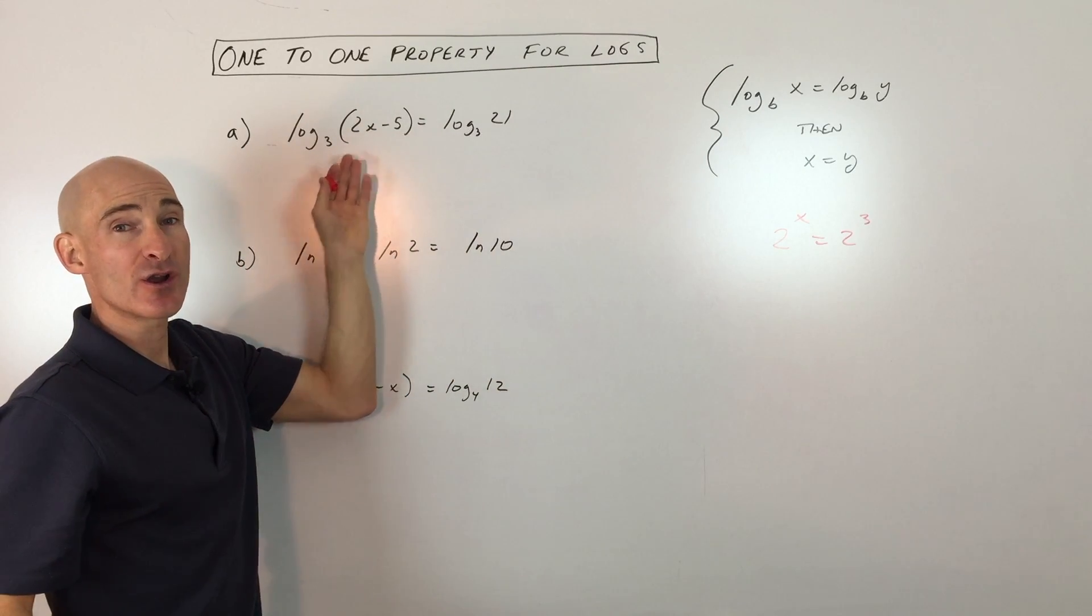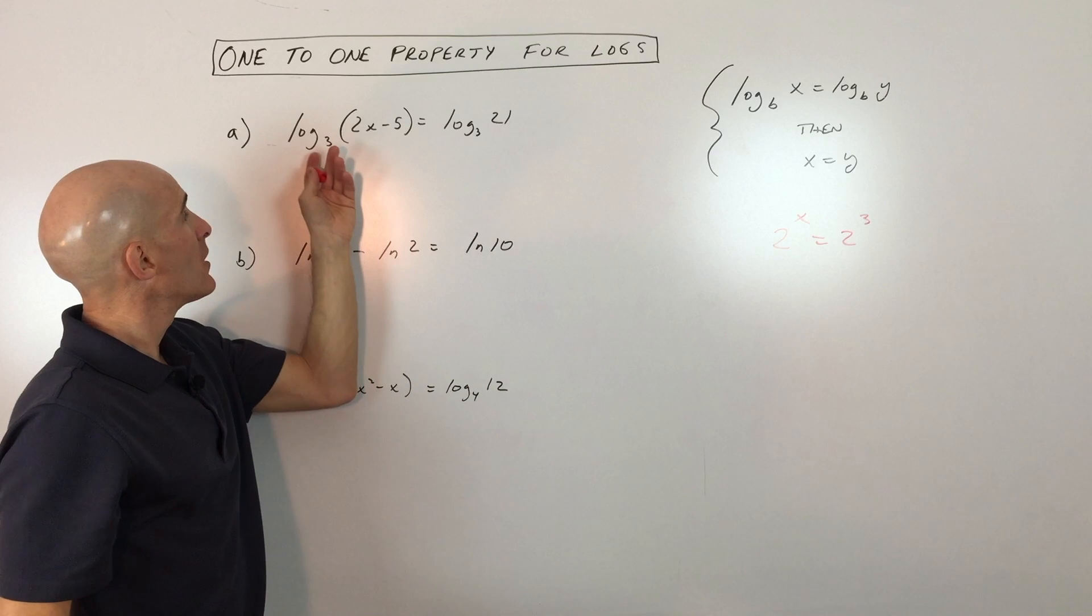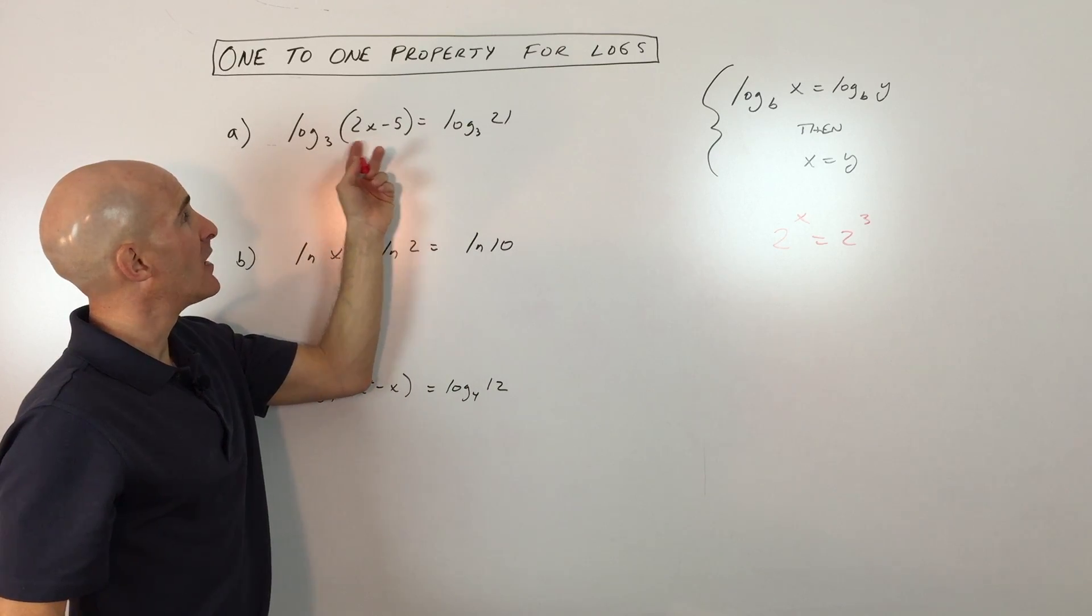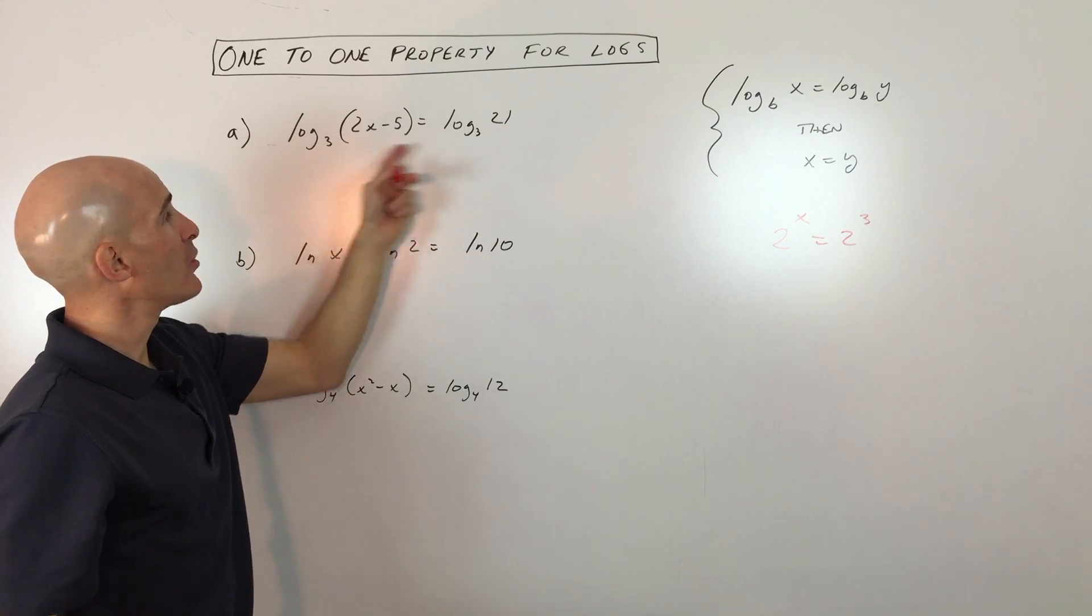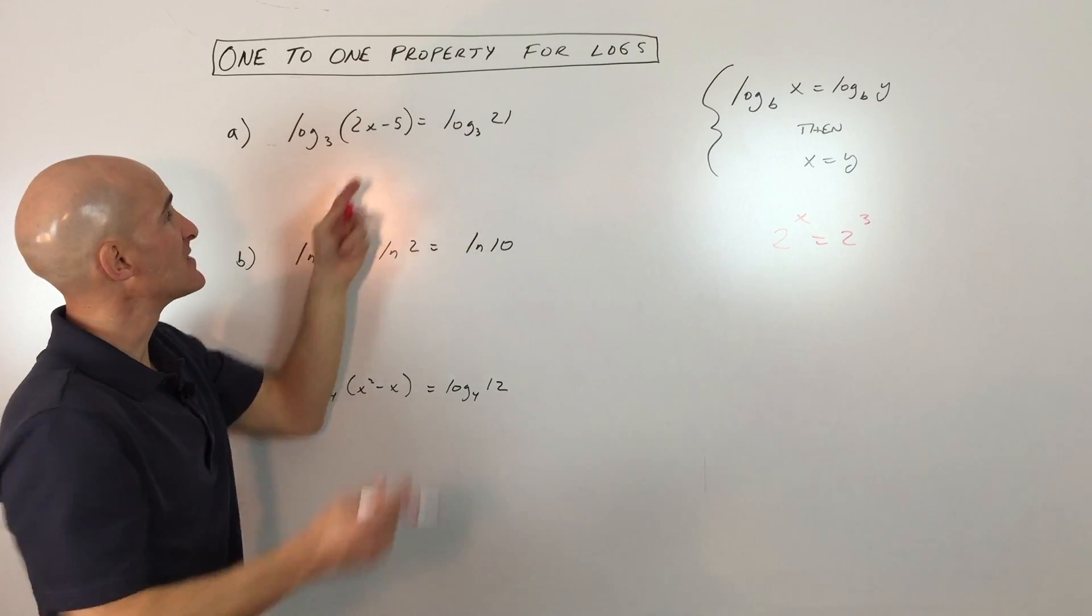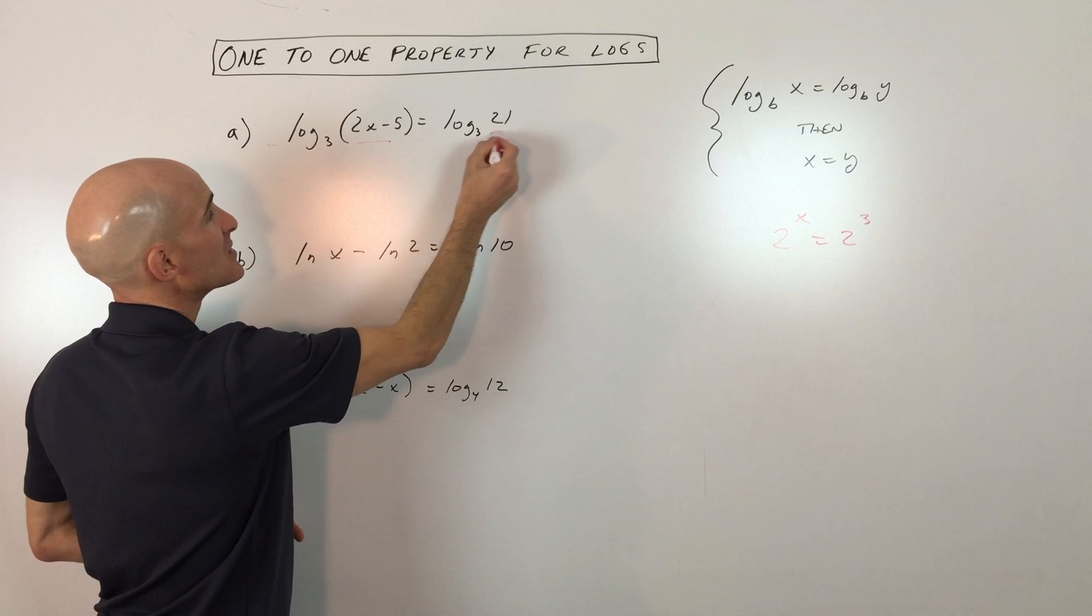Now let's get into some examples. We're going to start easy and get more challenging. So log base 3 of 2x minus 5 equals log base 3 of 21. You can see they're both log base 3, that's important. So that means that this argument must equal this argument.